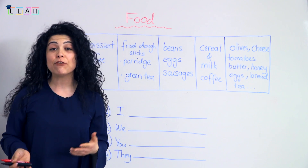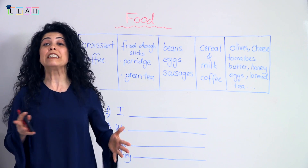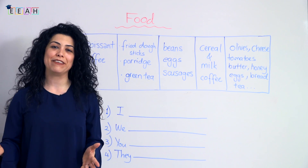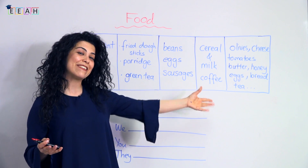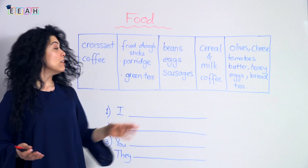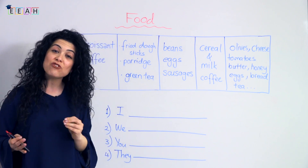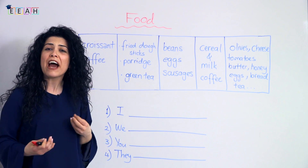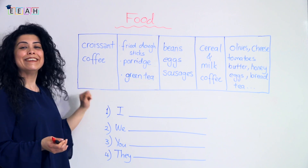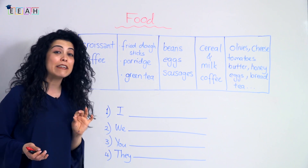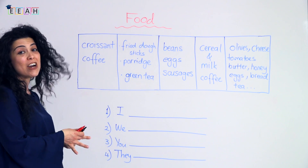What do you eat for breakfast? Let's think about it — in different parts of the world, people eat different kinds of food for breakfast. Today I'm going to take you to five different countries. Look at the food and tell me which country it belongs to. The first one: we have croissant and coffee. Yes, this is a typical French breakfast — so this is from France.